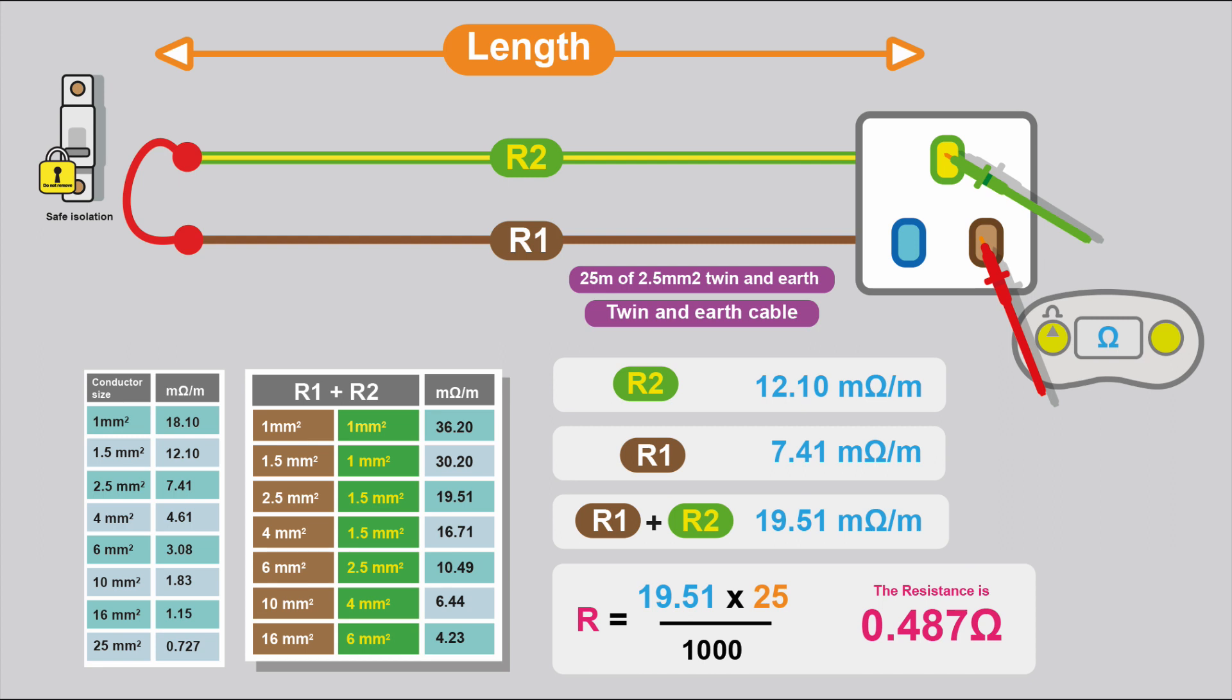In this case, we've installed a socket circuit. We want to do the R1 plus R2 test. It's linked out back at the board. Don't forget, this is all dead testing, initial verification. R1 and R2 is linked out back at the consumer unit. We test at the furthest point. If it's a socket, you could use a socket adapter.